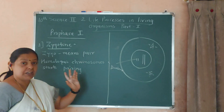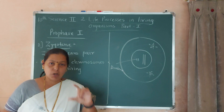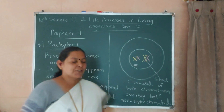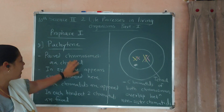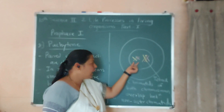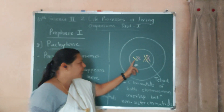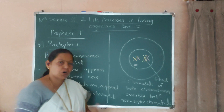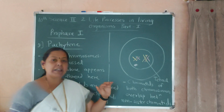One homologous chromosome comes from the father and one from the mother. The third step of prophase 1st is pachytene. In pachytene, the paired chromosomes are crossed, coiled, and can overlap on each other. The paired chromosomes are homologous chromosomes. In zygotene there appears a single-thread-like structure, but in pachytene both chromatids appear as a pair.